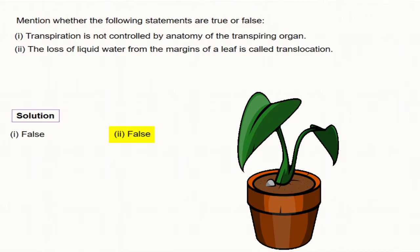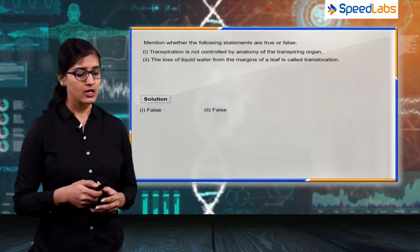And translocation is the term related to phloem transportation of nutrients which are dissolved in the phloem. The next statement is water mainly ascends the stem due to osmosis.